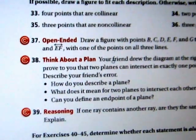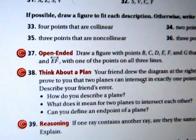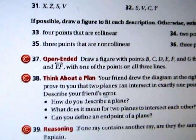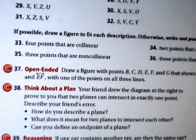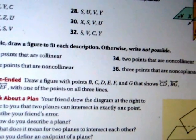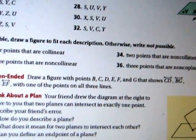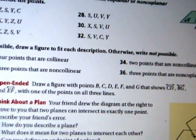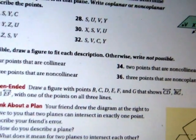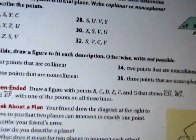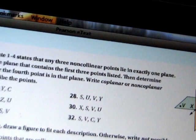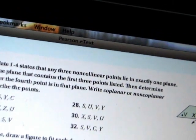Okay. Think about a plan. Your friend drew the diagram at the right to prove to you that two planes can intersect in exactly one point. Describe your friend's error. So first of all, how do you describe a plane? Well, a plane is a flat surface. But the thing about planes, just like lines, is they never end. So just because this here is a picture of a plane doesn't mean that it touches this other plane in exactly one point. Because this plane is supposed to extend forever. So is this one. And when they extend, then their intersection won't be in exactly one point, but it will be all along the line where the two planes cross. Just like up here, where the two planes cross, they cut through each other. Because they never end, their intersection will always be a straight line.